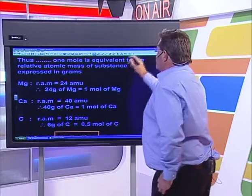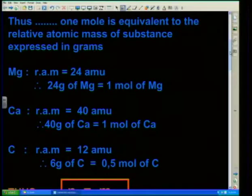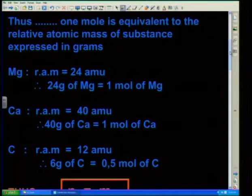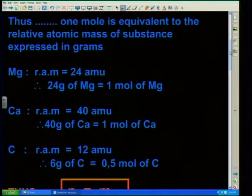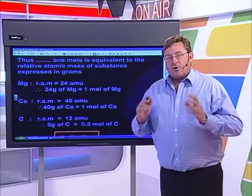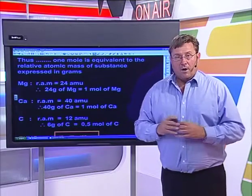One mole is equivalent to the relative atomic mass of the substance expressed in grams. Magnesium: relative atomic mass 24 amu, therefore 24 grams is one mole. Calcium: relative atomic mass of 40 amu, therefore 40 grams is equal to one mole. And if I have carbon, which is 12 amu, and I've got 6 grams of carbon, 6 is half of 12, therefore I've got 0.5 or half a mole of carbon.